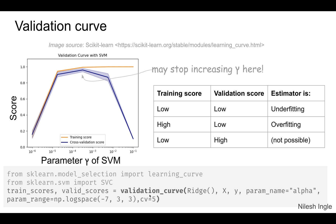We pass in the classifier, the data X, the features, and the target, then set parameters such as the number of CV folds. In the output we get the train scores and the validation scores, which we can then plot as shown. This plot is from the docs, and you can play with different classifiers to see how the plots look.